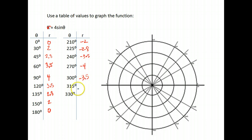Again, the sine of 315 is negative 0.7 times 4 is negative 2.8. And then of course, when we get to 330, the sine of 330 is negative 0.5 times 4 is negative 2.